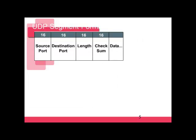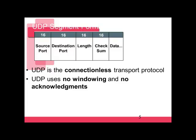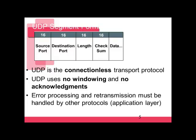Here's the UDP packet — it's very small with not a lot of information. It still has the source port and destination port, but that's really about it. UDP is connectionless: no windows, no acknowledgements. Error processing and retransmission must be handled by other protocols, like the application layer.